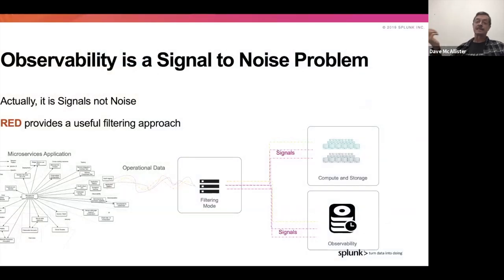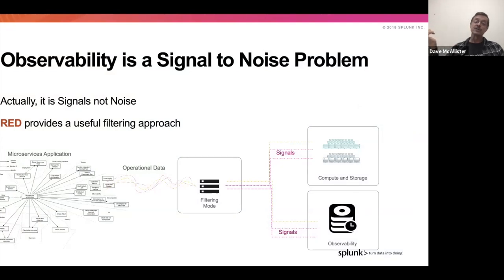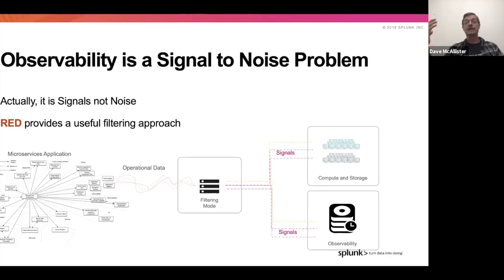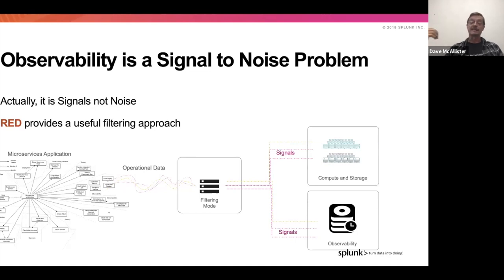Observability really is a signal to noise problem — but it's actually signals to noise. RED is providing a useful filtering method here. We have operational data coming in, and there are two ways to clarify the signals. We can reduce the number of inbound signals, reducing noise, but that also reduces fidelity and the capacity to answer the question observability looks for: how do we find the unknown unknowns? The preferred side is to filter post-reception, clarifying the signal without the same loss, and we can defilter back to the original signal.